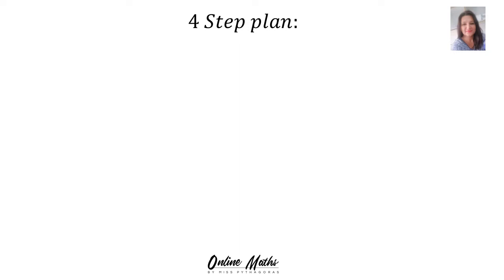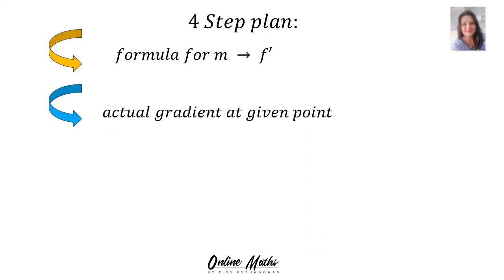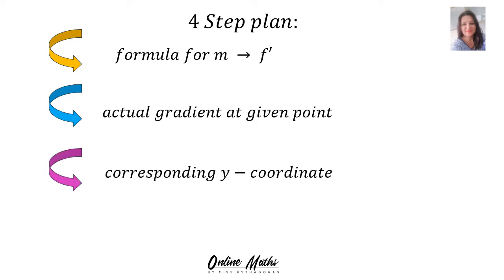There is a four-step plan you can follow to find the equation of the tangent. Step 1: find the derivative — that gives you a formula for the gradient m. Step 2: substitute the given x-value to work out the actual gradient at that point. Step 3: work out the corresponding y-coordinate at that point. Step 4: substitute into y = mx + c to work out c's value and write the equation of the tangent.